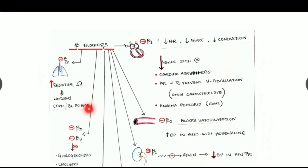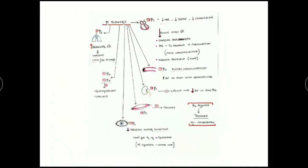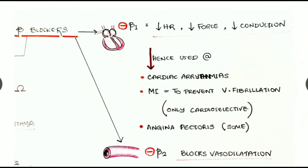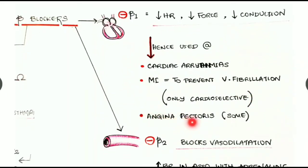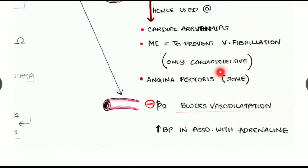The uses of beta blockers: in the heart, beta-1 receptor inhibition causes reduced heart rate, reduced force, and reduced conduction. Hence beta blockers can be used in cardiac arrhythmias, in myocardial infarction to prevent ventricular fibrillation — where only cardioselective drugs are used — and in some cases of angina pectoris.